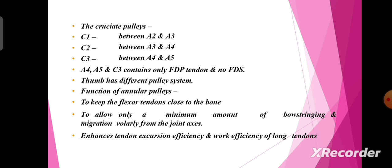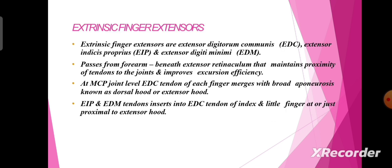The function of the annular pulleys is to keep the flexor tendons close to the bone, allowing only a minimum amount of bowstringing and migration away from the joint axis. This enhances tendon excursion efficiency and work efficiency of the long tendons. Next is extrinsic finger extensors.